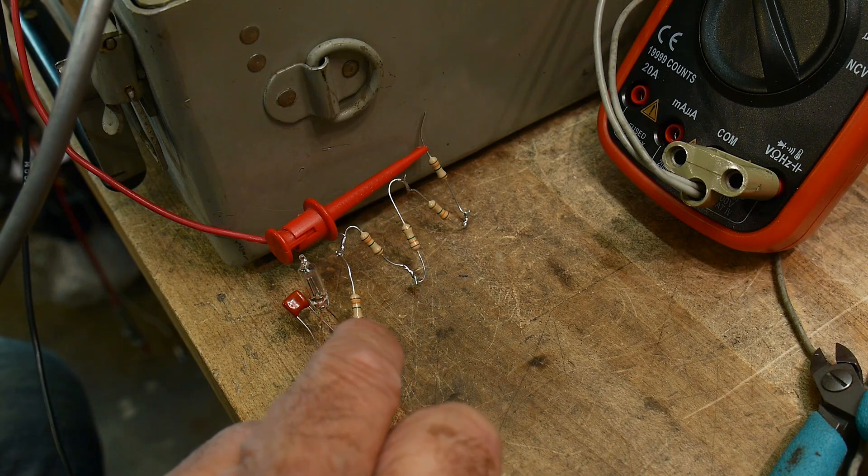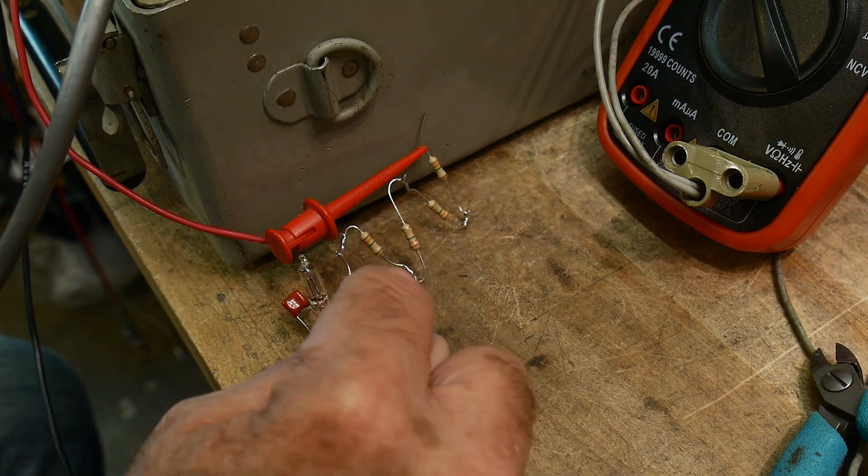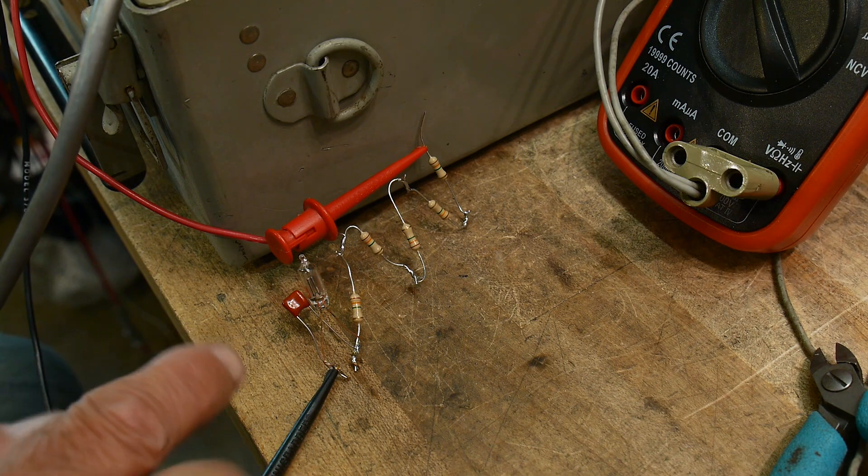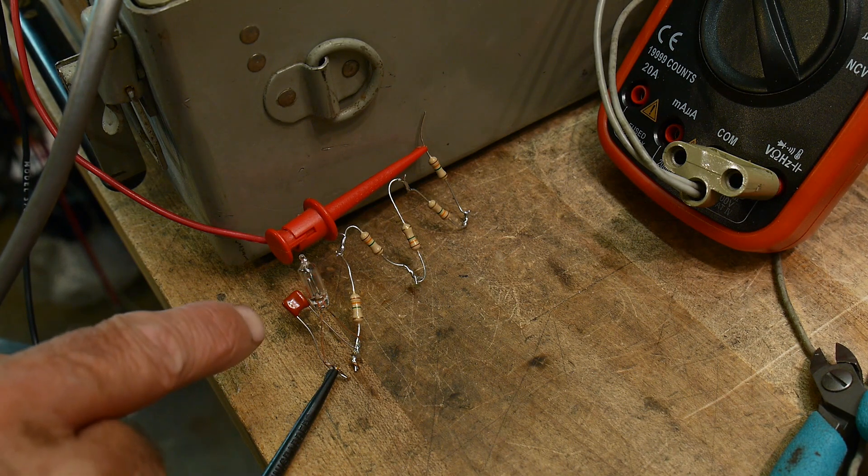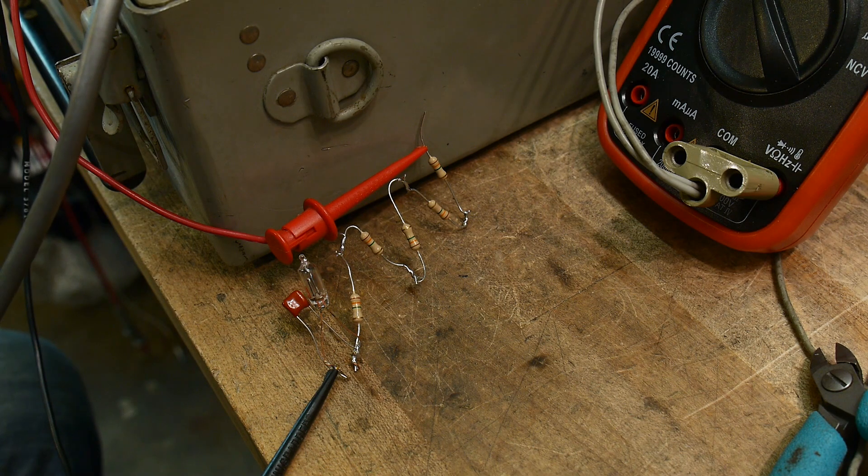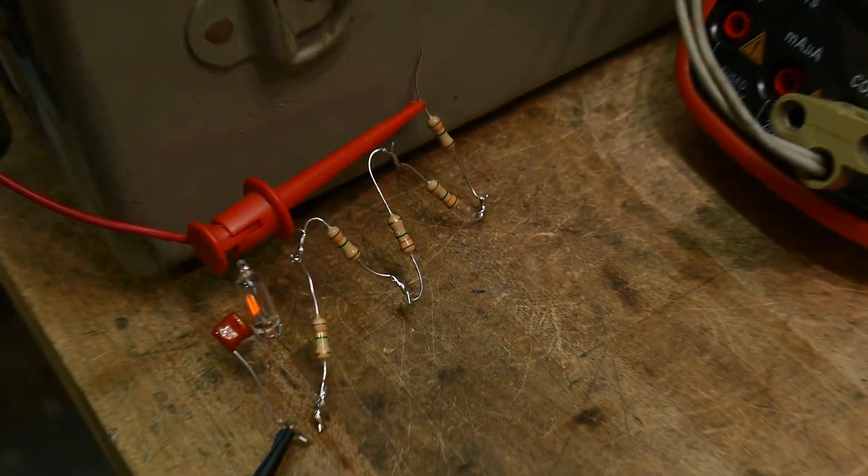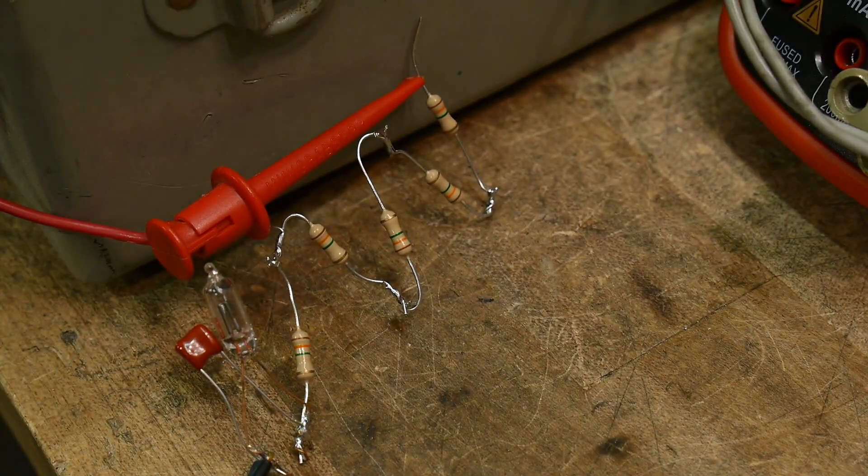All right. So here it is over here. There's one, two, three, four, five resistors. Each one is 1.3 megohms. And here's my 0.022 microfarad capacitor, 22 nanofarads. And there we go. We see the neon bulb flash.